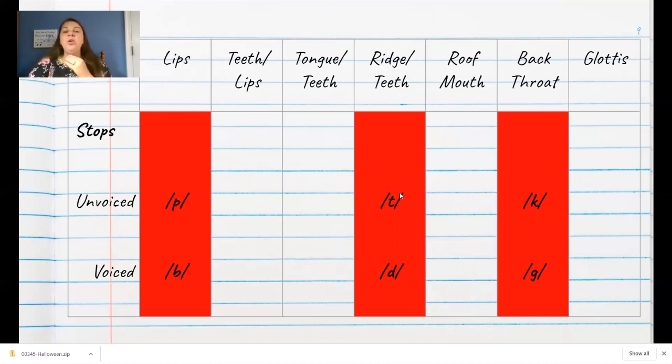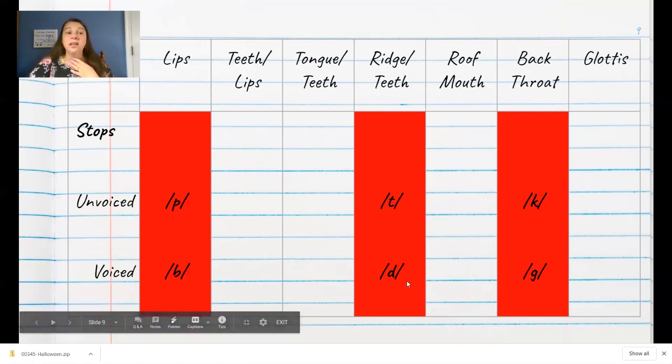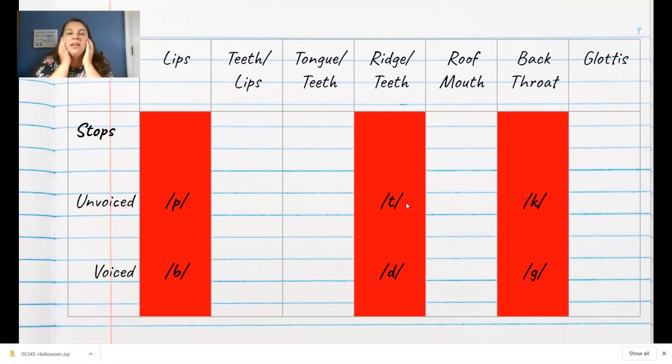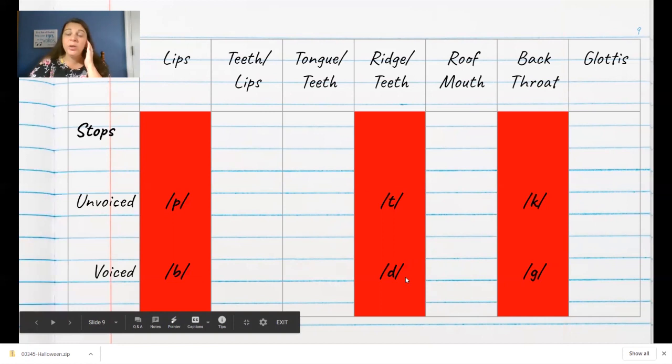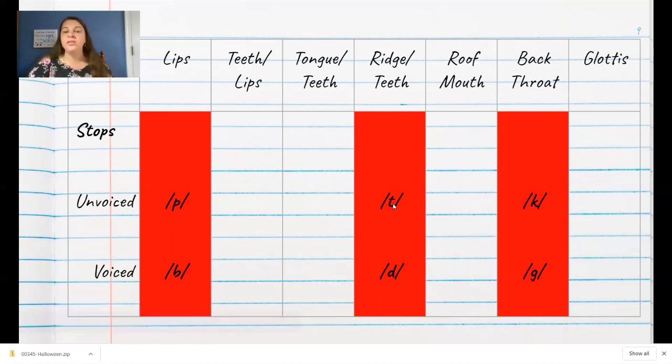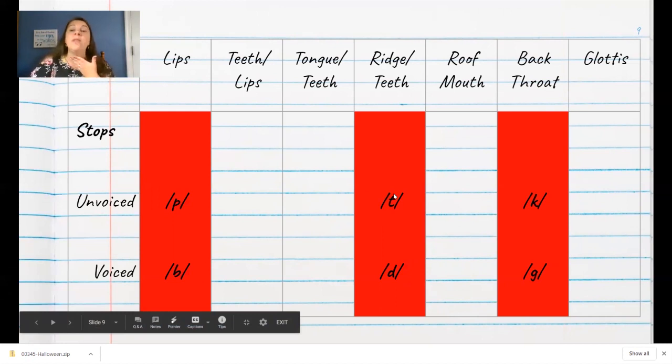And then when you put your tongue sort of behind the ridge of your teeth, we get t, t, t, t, as the unvoiced sound and d, d, d, d, as the voiced sound. So try those stops. T, d, t, d. If you're having trouble feeling the vibration, you can try covering your ears. T, d, t, d. You can hear that voiced sound a lot louder when you are closing your ears than what you hear that unvoiced sound. Sometimes that will help students more than feeling their throat.